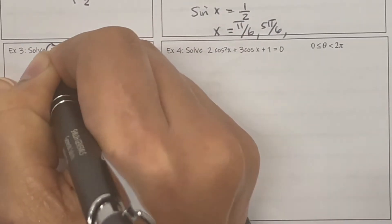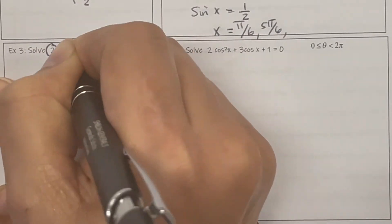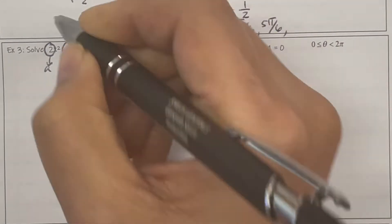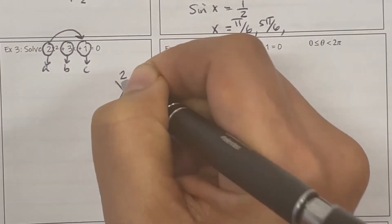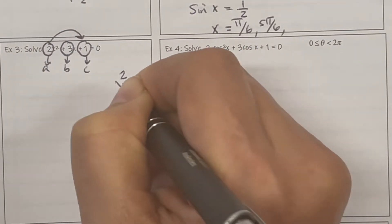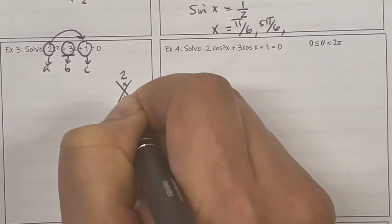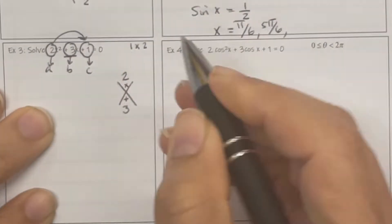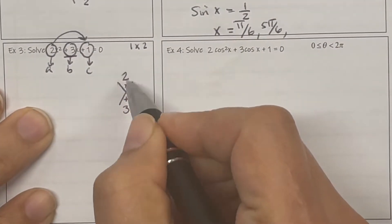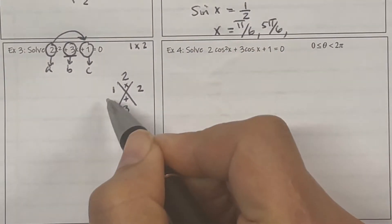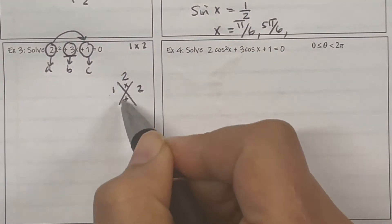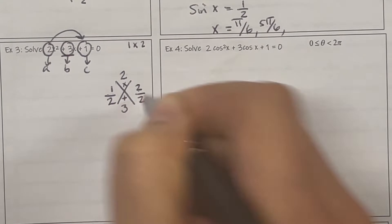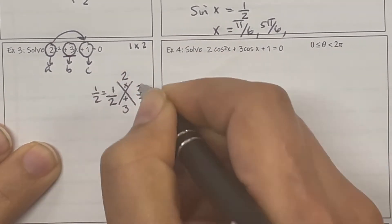We're going to circle: that's A, that's B, that's C. Do not forget your symbols. In the X game, A times C is 2 and it adds to the middle, which is 3. What two numbers do that? Try 1 times 2 — that works. They're both positive: 1 times 2 is 2, and 1 plus 2 is 3. So divide by A, which is 2. That equals 1 half, and that equals 1.